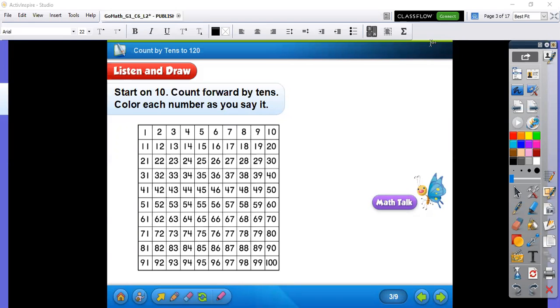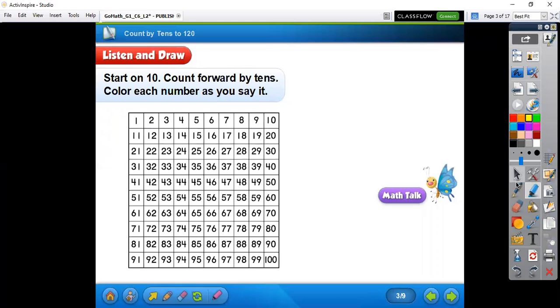Good morning, today we're going to do counting by tens. So this is our hundreds chart and we're going to start at the number 10 and then count forward by 10. So you can count with me, so we're going to highlight as we count forward by tens. So we're going to say 10, 20, 30, 40, 50, 60, 70, 80, 90, and 100.